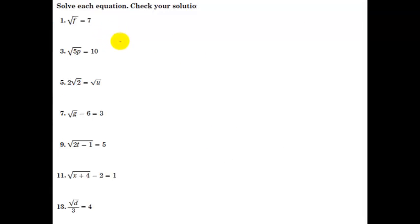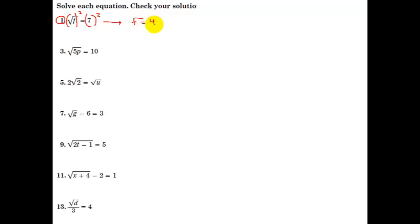Here are some examples. The first one is incredibly easy — there's nothing to add, subtract, multiply, or divide. The square root symbol is by itself. So, to solve this, you square both sides. We square this side and we square this side, and we get f equals 49. You check by plugging this back in: is the square root of 49 equal to 7? Yes, so it works.